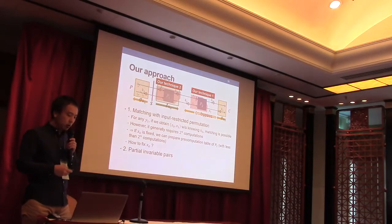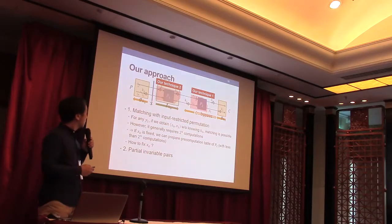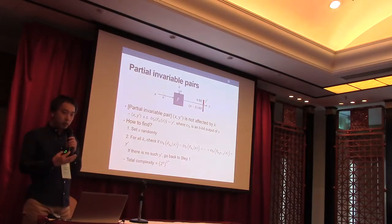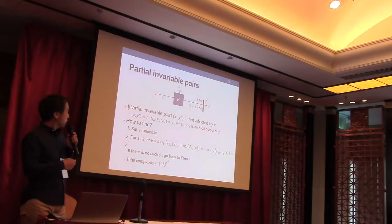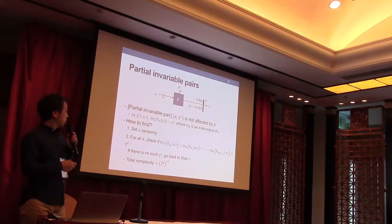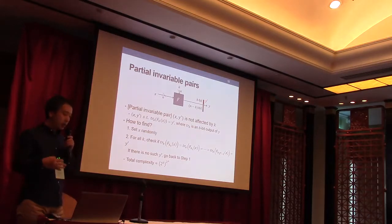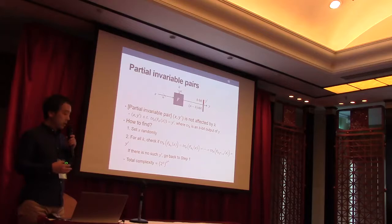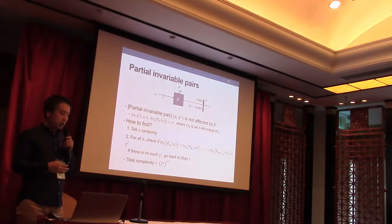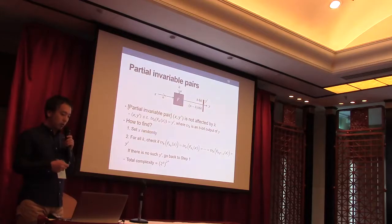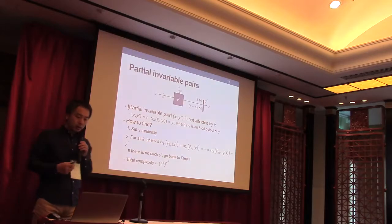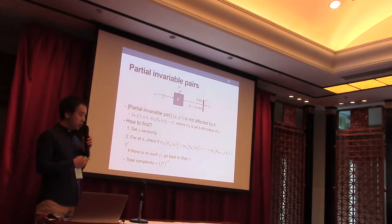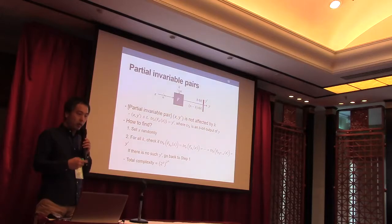So we use another technique called partial invariable pairs. Partial invariable pair is a pair of input X and a partial output Y prime, such that Y prime is not affected by K. In other words, Y prime is unchanged for all K.